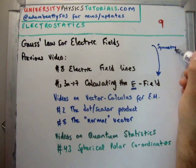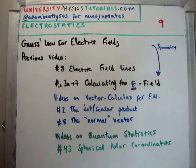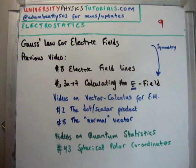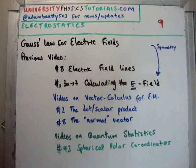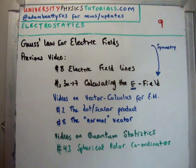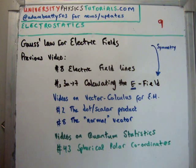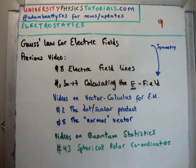In the case that you do not have symmetry or a specific type of symmetry, you revert back to the methods in videos 3a through 7. From my vector calculus for electromagnetism series, video number 2 covers the dot product and scalar product, and number 8 covers how to calculate the normal vector. Video number 43 on spherical polar coordinates is very important and I will be using that in this video.